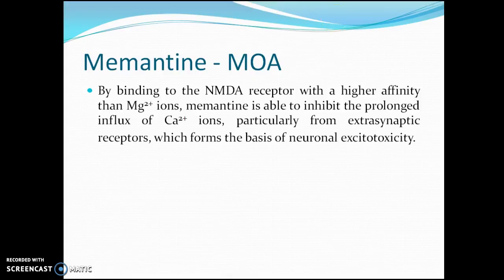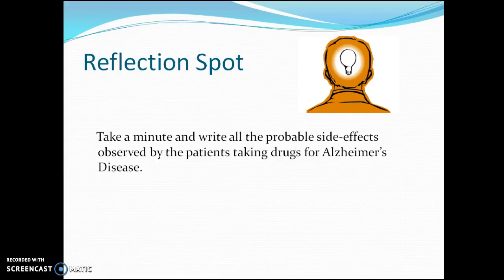Memantine acts by binding to the NMDA receptor with high affinity, like magnesium ions, and is able to inhibit the prolonged influx of calcium ions — particularly from extra-synaptic receptors — which forms the basis of neuronal excitotoxicity. The drug prevents excitotoxicity in neurons by blocking NMDA-associated calcium channels.